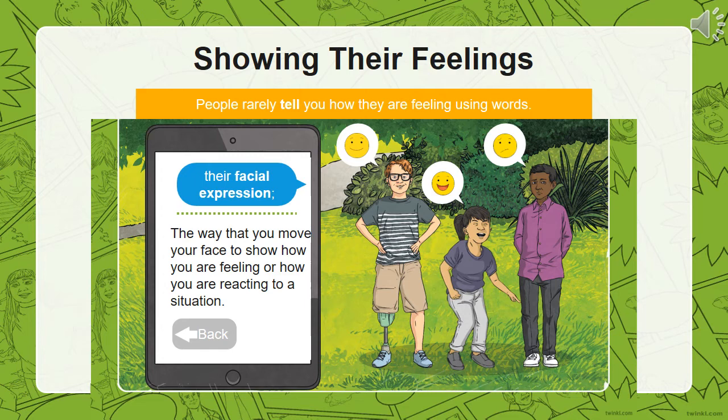People's facial reactions can also tell us a lot. Facial reactions are the way that you move your face to show how you are feeling or reacting to a certain situation. Here we have three different types of facial expressions: a young girl who finds something extremely funny, a boy that is happy, and a boy that may be a little bit sad. They all have different facial expressions, helping us to identify their emotion.